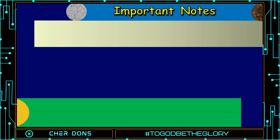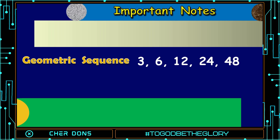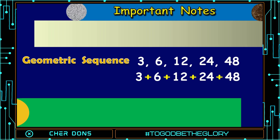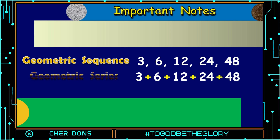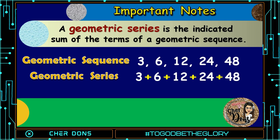Important notes. I have here a sequence: 3, 6, 12, 24, and 48. Yes, it is a geometric sequence because we have the same value of the common ratio r, and that is 2. Now, let's explore it more. What if we insert a plus sign in between the given terms? It becomes 3 plus 6 plus 12 plus 24 plus 48. What do we've got? We have the so-called geometric series. It starts as a geometric sequence, and then we add up all the terms. That's what makes it a series. A geometric series is the indicated sum of the terms of a geometric sequence.